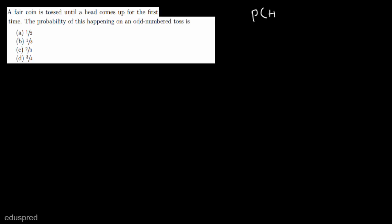In this video I am going to solve this question. A fair coin is tossed until a head comes up for the first time and we have to find the probability of this happening on an odd numbered toss. Since the coin is fair, probability of getting a head is equal to probability of getting a tail, which is 1/2. We have to find the probability that the first head comes on an odd numbered toss.